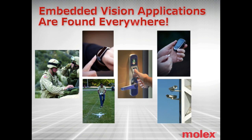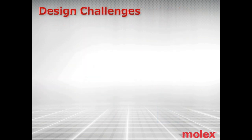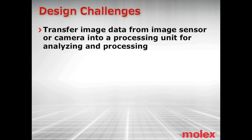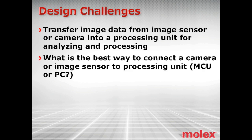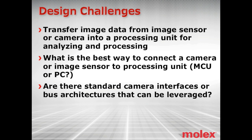But embedded vision poses some real challenges in connectivity too — we've got a lot of data that needs to be moved around in a hurry before we can think about analyzing it. Engineers face many challenges when designing an embedded vision system. The biggest challenge is transferring image data from an image sensor or camera into a processing unit. Engineers ask themselves: what is the best way to connect a camera or image sensor to a processing unit? Are there standard camera interfaces or bus architectures that can be leveraged?